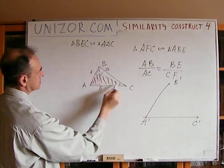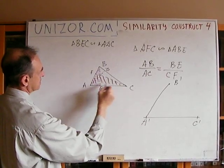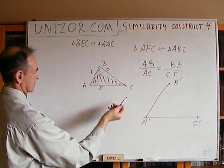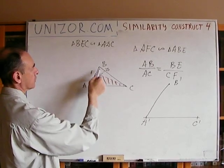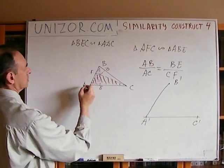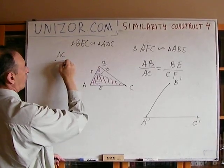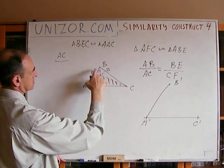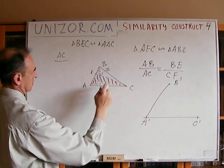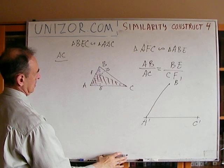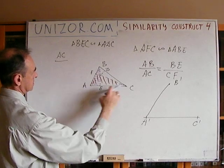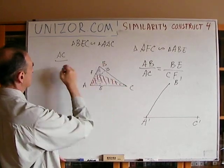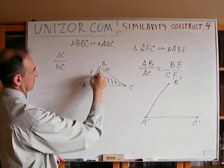From this similarity I can derive the proportional relationship: AC over BC — yes, BC — as the two hypotenuses, are related as cathetus AD to cathetus BE. So if I know A'C' and the ratio AD to BE — which are known altitudes — I can find B'C'.